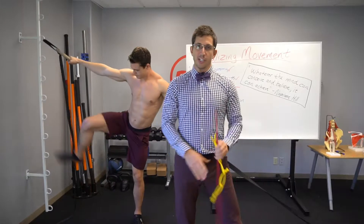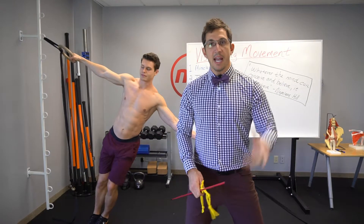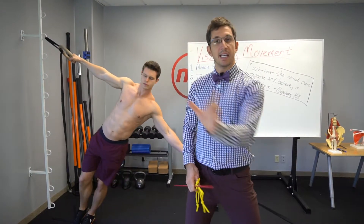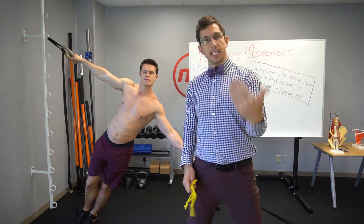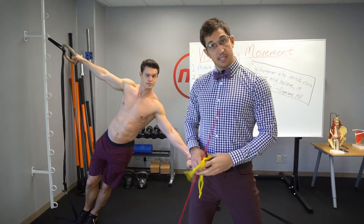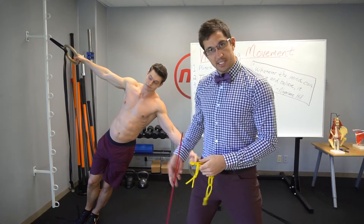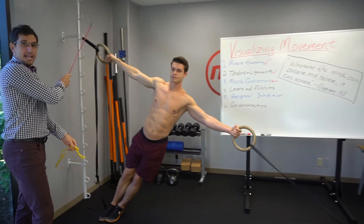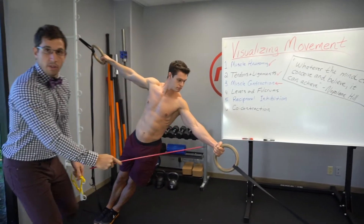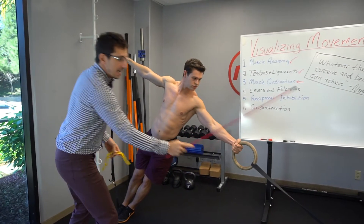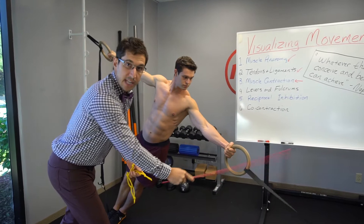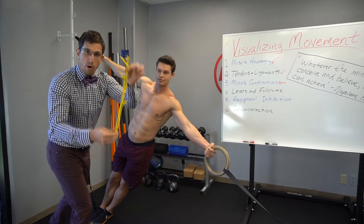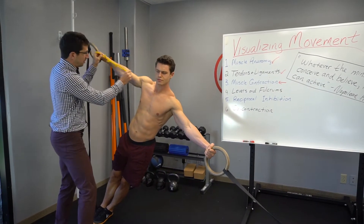Muscle contraction occurs the exact same way as taking a warm penis and putting it in cold water — it shrinks. For example, right here these are the tendons, this is all the muscle strand, and this is another tendon. Imagine these are a bunch of warm penises all linked together.